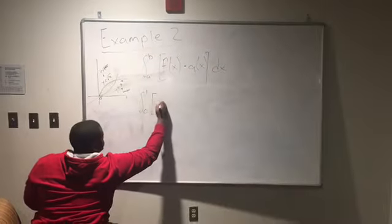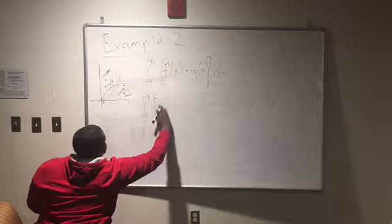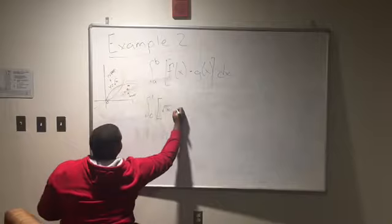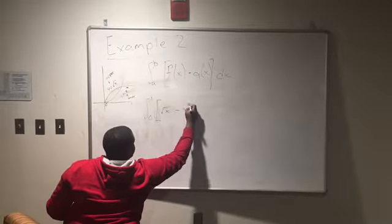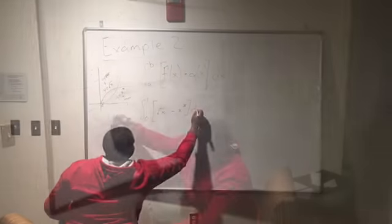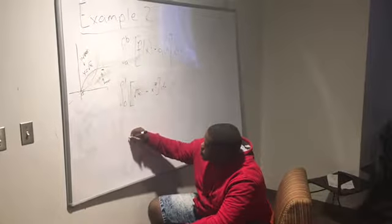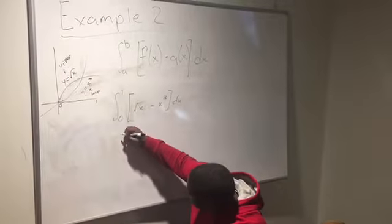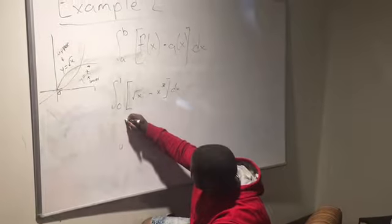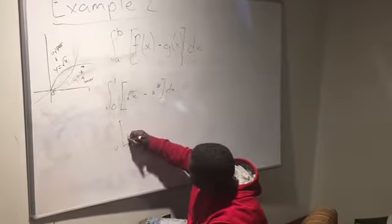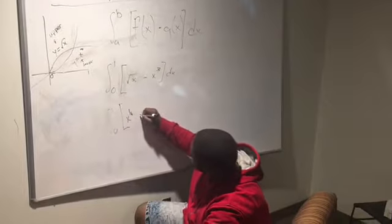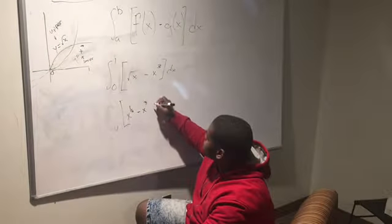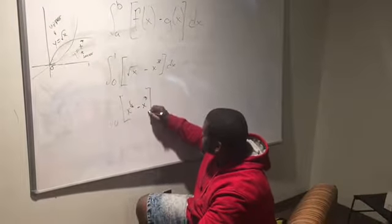As we plug in the function to integrate it, you want to plug in the square root of x for f of x minus x cubed, or g of x, all multiplied by dx to find the integral. You want to make sure that you give the square root of x into an easier form to integrate, which is x to the 1 half. So now you should have the definite integral from 0 to 1 of x to the 1 half power minus x to the 3rd power, all multiplied by dx.